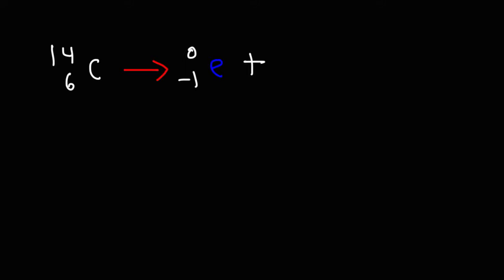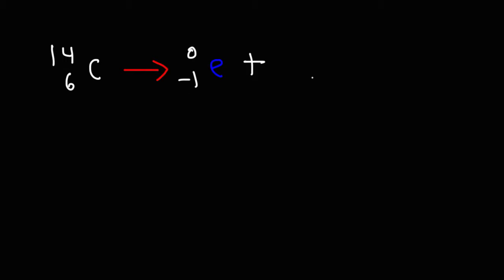In this video, we're going to talk about how to balance nuclear equations. In this example problem, we have an isotope of carbon, carbon-14, undergoing beta decay, which means that it's emitting a beta particle or an electron. What is the missing element in this reaction?